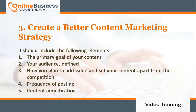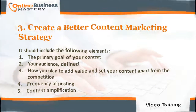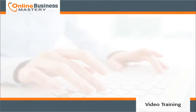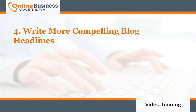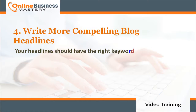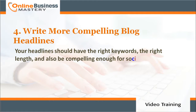Continuing the content marketing strategy elements: number four, frequency of posting; number five, content amplification. Number four: write more compelling blog headlines. Your headlines should have the right keywords, the right length, and also be compelling enough for social media users to click on them.